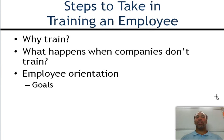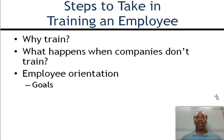What happens when companies don't train? You have high turnover, job dissatisfaction, and individuals making mistakes because they weren't appropriately trained. Employee orientation is the best time to start that training right then and there — get new employees acclimated to the company and right into training so they know what they're doing. Of course it's not all going to set in right away, so you combine orientation with on-the-job training. It also helps to set goals so employees know what they need to do within their workspace.